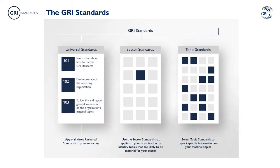Let's start with an overview of the entire system of the GRI Standards and where the Sector Standards will fit. On this slide, you can see the structure of the updated system. There are three sets of Standards – Universal Standards, Sector Standards and Topic Standards.